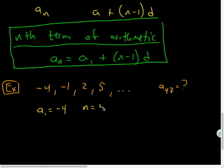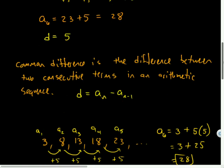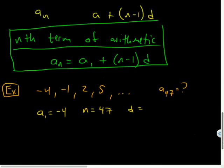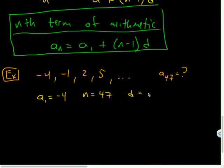So I don't know a sub n yet. A sub 1 is negative 4. N is 47 in this case. And what's the common difference? Three. And the common difference, we had that formula a little earlier. It is just the difference of any two consecutive terms, the former from the latter. So I could do the common difference by doing negative one minus negative four and getting three. But I also could have done five minus two and gotten three.